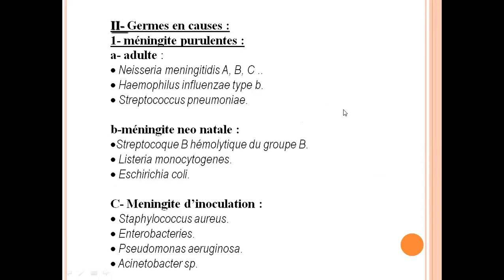Selon l'aspect du LCR, on a des méningites purulentes et des méningites à liquide clair. Les méningites purulentes, c'est généralement bactérien. Les méningites à liquide clair, c'est généralement viral. Mais les exceptions existent : il y a des méningites à liquide clair mais bactériennes. Cela diffère aussi selon le moment du prélèvement. Si le prélèvement est fait précocement, on peut avoir un liquide clair et avoir une bactérie.